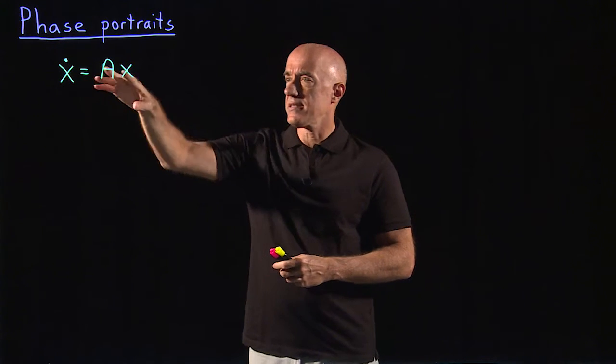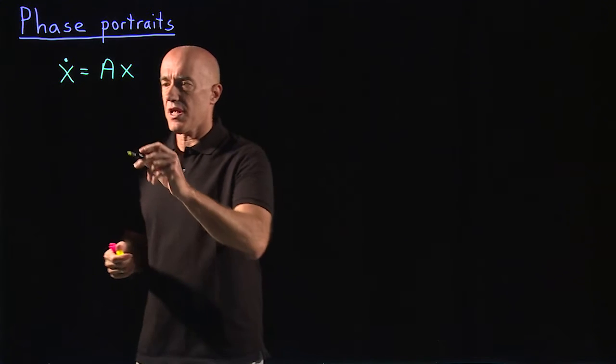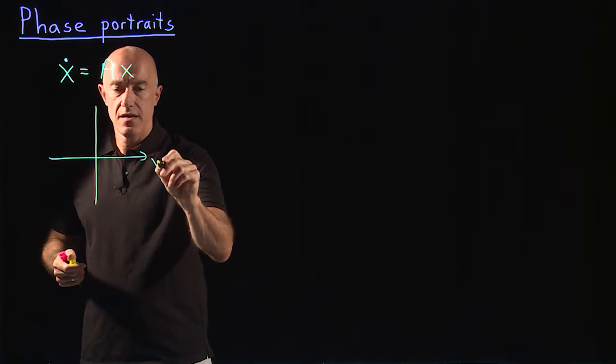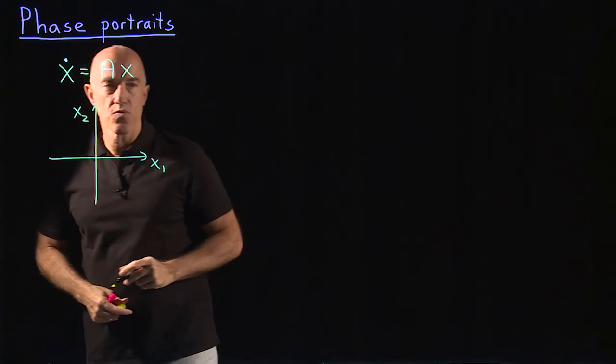So x is a column vector, x1 and x2, and the visualization then draws the solution of x2 versus x1.